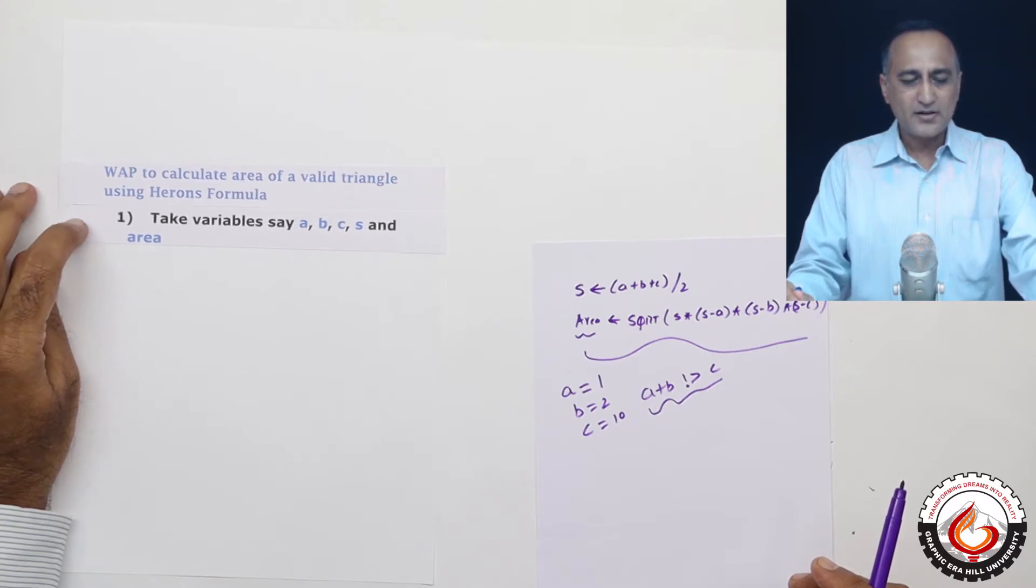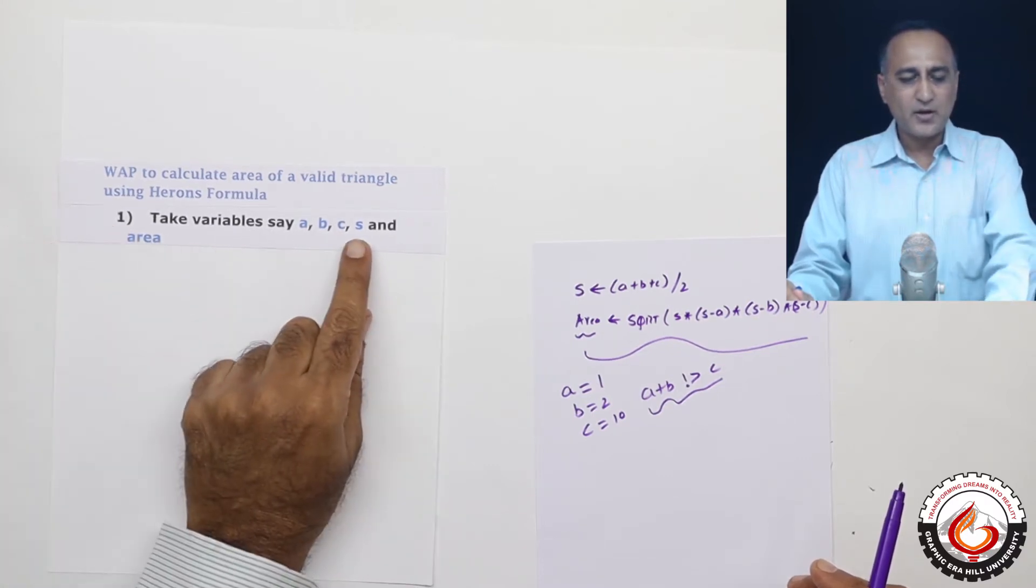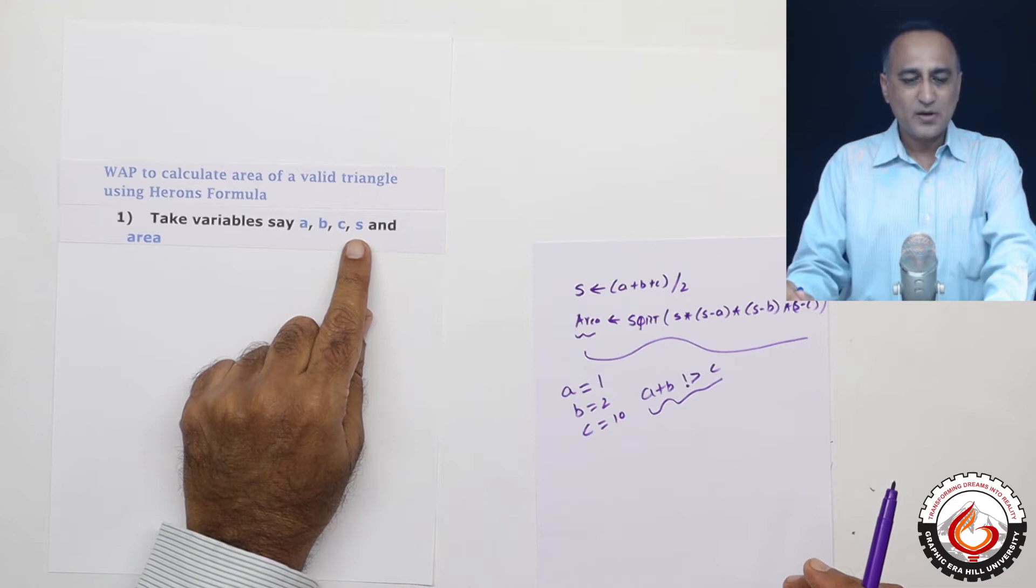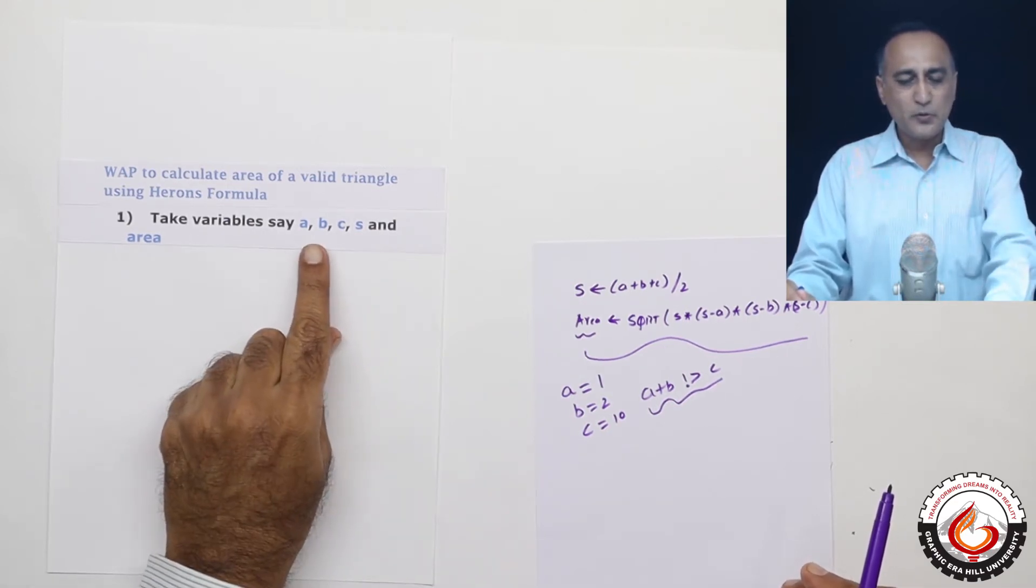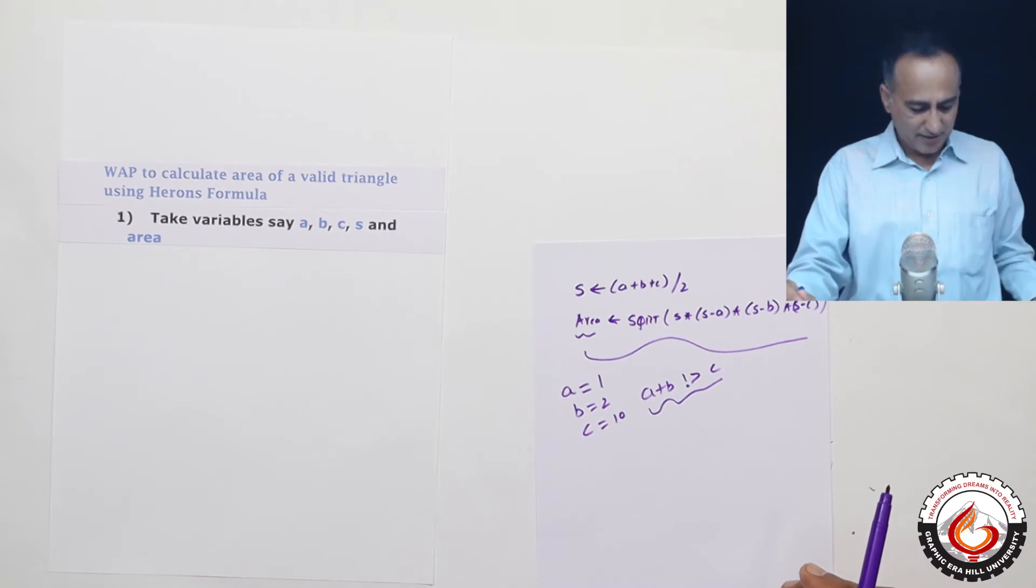Now in order to calculate the value of area, I need to calculate the value of S. But even before that, I first need to check whether the input A, B, C is a valid triangle or not.